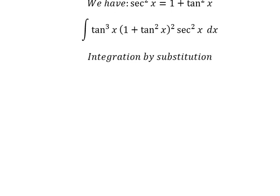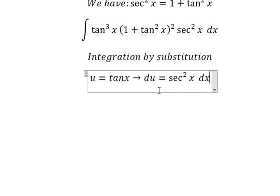So I will let u equal to tan x. And then we need to take the derivative of both sides. And we have du equals secant squared x dx.